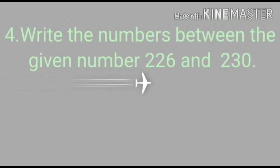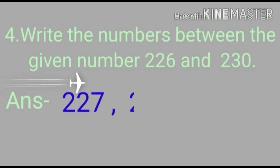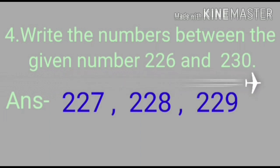Now, question number 4 is write the numbers between the given number 226 and 230. Yes! The 3 digits are 227, 228, and 229.